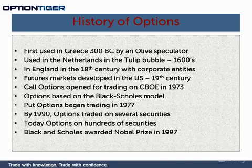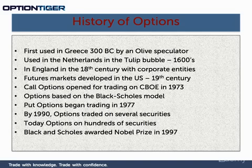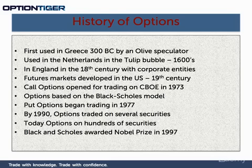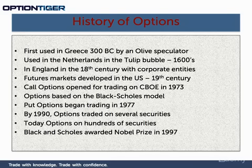Since then, there have been several uses, although not always documented clearly. We know that options were used in the tulip bubble in the Netherlands in the 1600s. In England, there was also an attempt to use option-like instruments associated with corporate entities and companies. In the US, futures markets developed in the 19th century. In 1973, call options started trading on the CBOE, based on what is called the Black-Scholes pricing model. Black and Scholes were two mathematicians who came up with this options pricing model. Put options began trading in 1977.